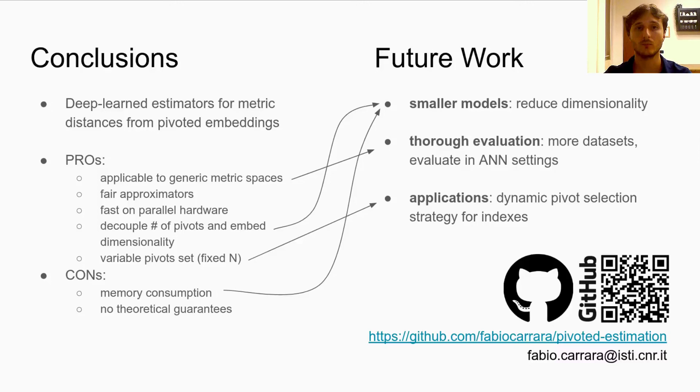In conclusion, in this work, we explored this deep-learning approach for estimating metric distances from pivoted embeddings. Our approach, based on regression, is applicable to generic metric spaces, and in our preliminary experiments, it provided a fast and fair approximation. On the downside, it does not provide any theoretical guarantees on the estimation, and currently is very memory-hungry.